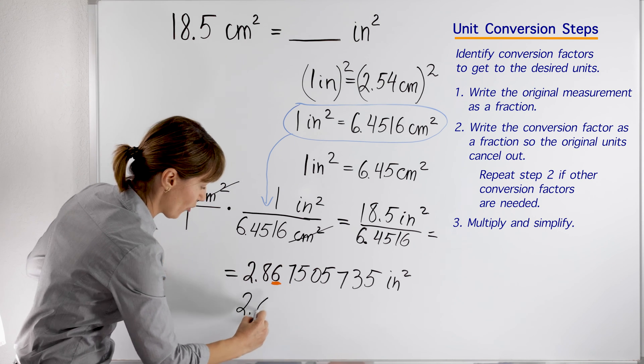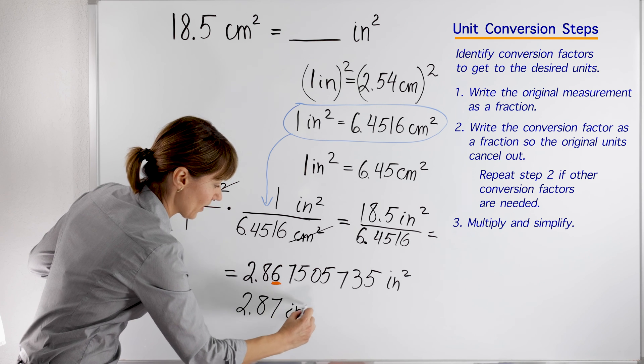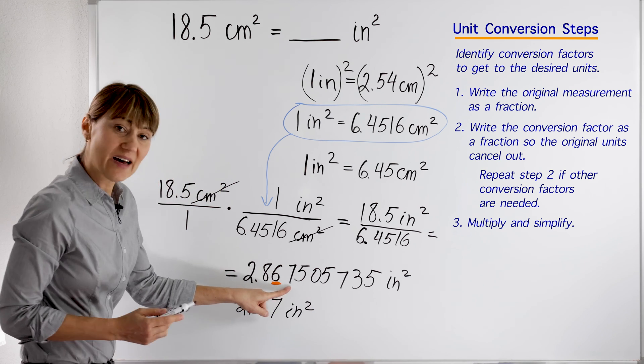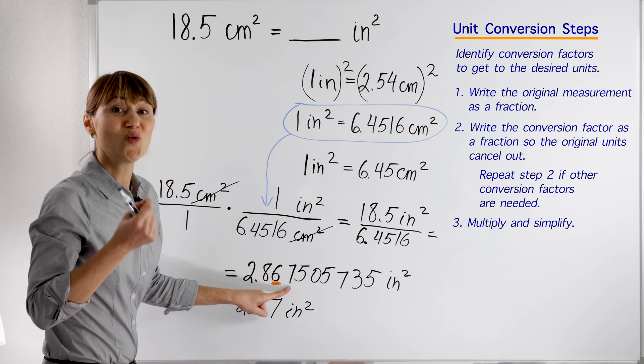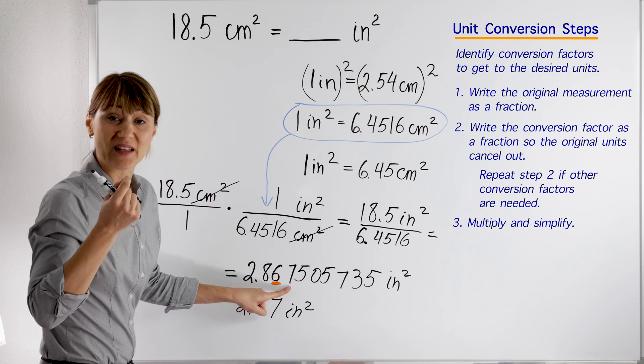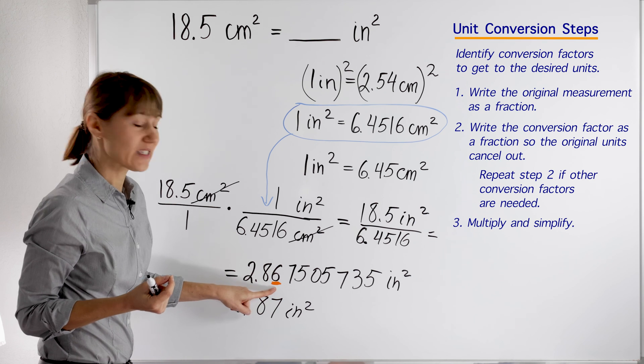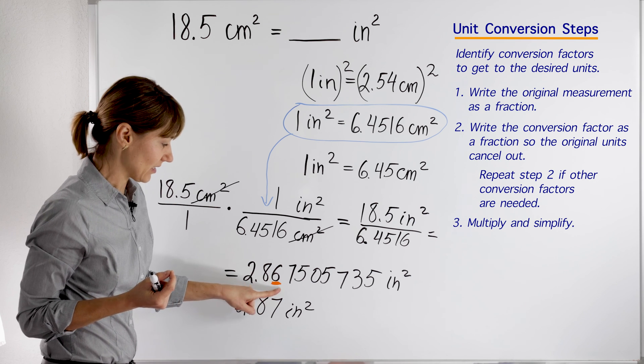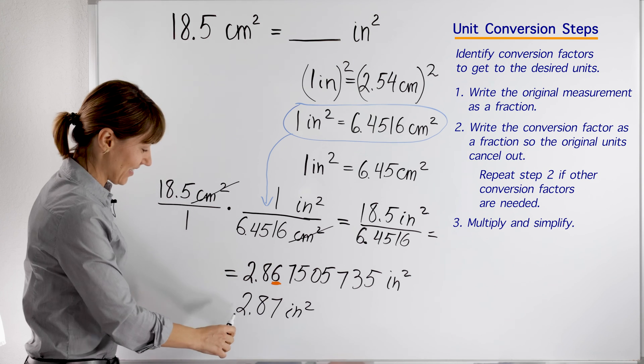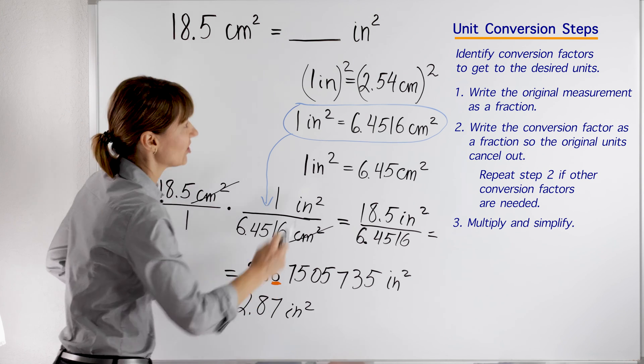We will have 2.87 inches squared. If the 7 were 0, 1, 2, or 4, we would leave 6 by itself and it would be 2.86. So we got our answer: it is 2.87 inches squared.